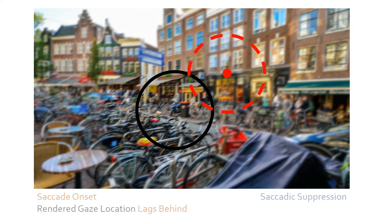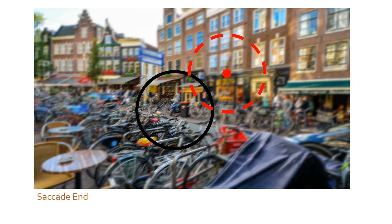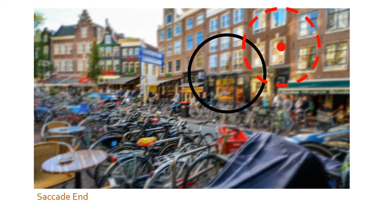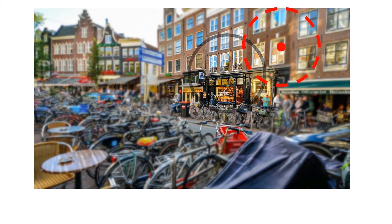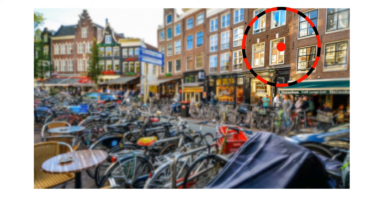The resulting wrong quality provided to the fovea region during the saccade is hidden thanks to saccadic suppression. When the saccade ends, a new fixation is established and saccadic suppression ends. Due to the delay in the prediction of gaze, the user perceives artifacts in the form of low quality. Only after an extended period of time is the image updated to the new fixation and the correct quality presented to the user.